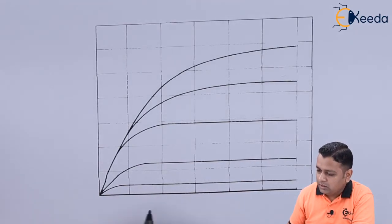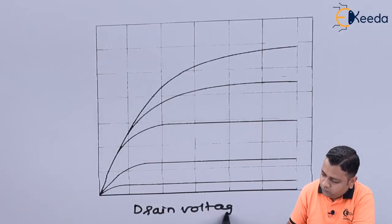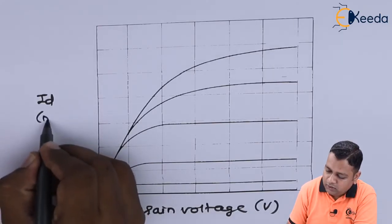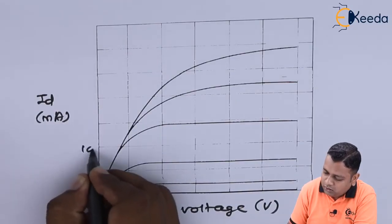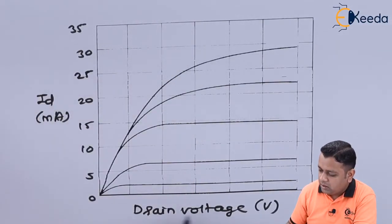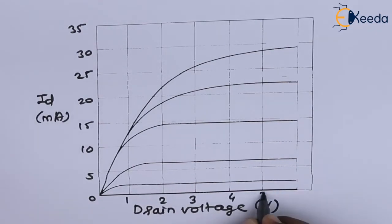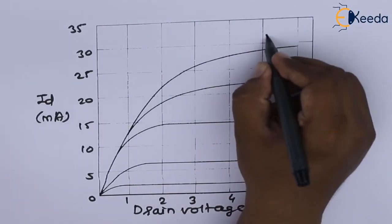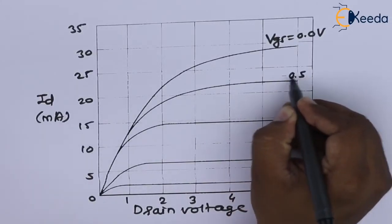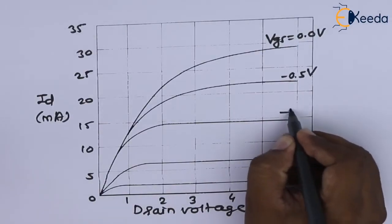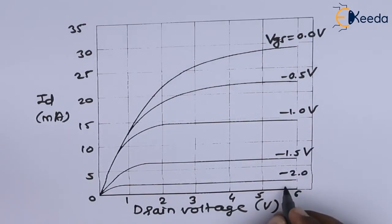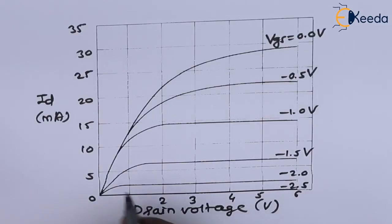The IV characteristics of the MESFET show drain voltage (in volts) on the horizontal axis and drain current I_D (in milliamperes) on the vertical axis, ranging from 0 to 35 mA and 0 to 6 V. For V_GS = 0 V, we get the highest curve; for V_GS = −0.5 V, −1.0 V, −1.5 V, −2.0 V, and −2.5 V, progressively lower curves are obtained, with −2.5 V yielding nearly zero drain current.